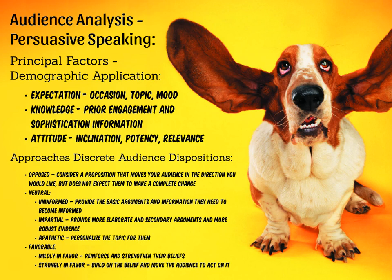We might necessarily confuse knowledge and attitude in our everyday conversations, but these are two distinct things in regards to your audience. For example, your audience might have a very potent negative inclination to your argument, but that may just mean that they have a very low knowledge level — they don't know enough about your proposition to make an informed opinion. Knowing all three of those principal factors will help you determine how to orient your approaches and make them work to maximum effect.